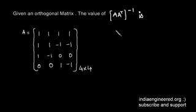This question was asked in GATE Electronics and Communication 2005. We are given that the matrix is orthogonal and we are asked to find out the value of [A * A^T]^(-1).